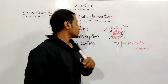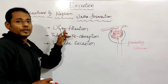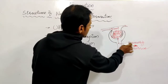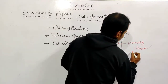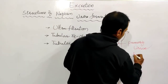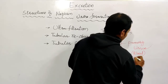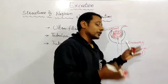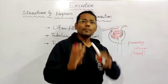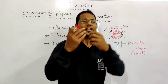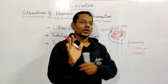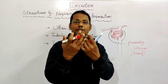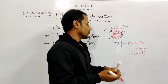So this step - where blood is filtered into the Bowman's capsule to form primary urine - is known as ultrafiltration. This primary urine is almost equal to our blood in composition. The important materials present in blood are also present in the primary urine.